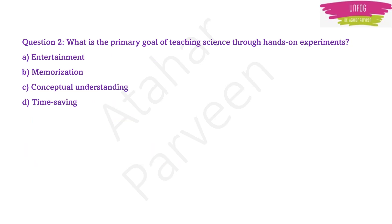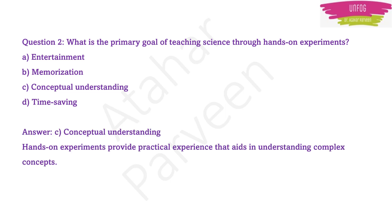Next question: what is the primary goal of teaching science through hands-on experiments? This is a very simple, easily understandable question. The answer is conceptual understanding, because hands-on experiments provide practical experience to the learner that aids in understanding difficult or complex concepts. So option C, conceptual understanding, is the correct answer.